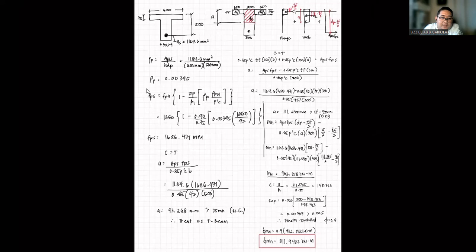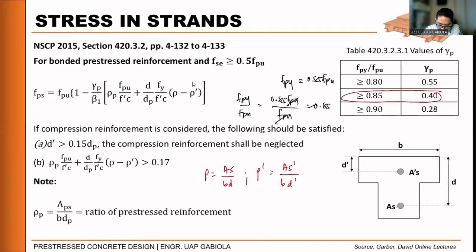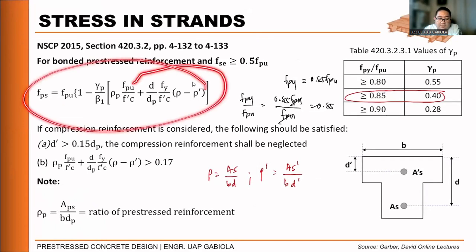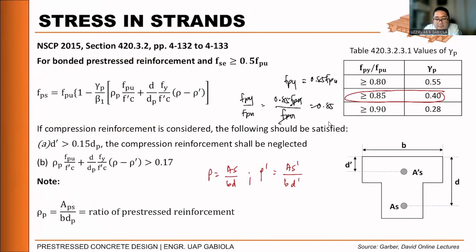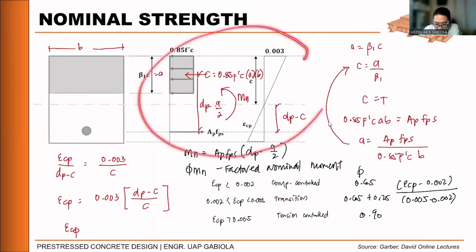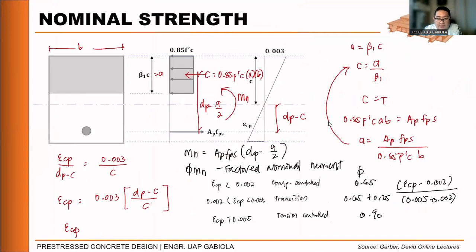If there is non-prestressed steel as well, the FPS formula is expanded to include those terms. The moment capacity would then be the combination of the contribution of non-prestressed rebar plus the prestressing tendon, and depending on whether it is a T-beam, minus the web capacity — based on the stress diagram.